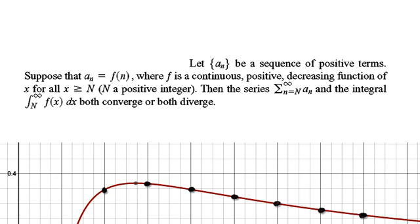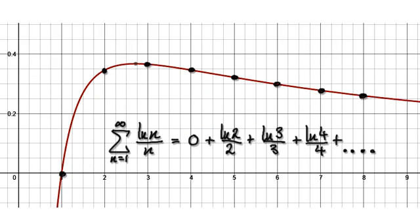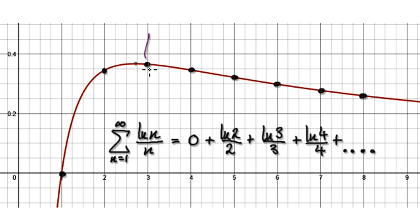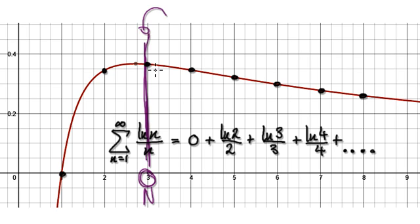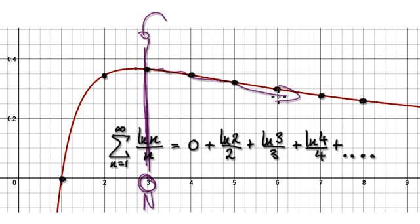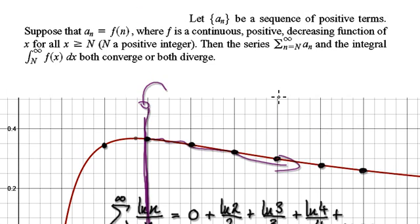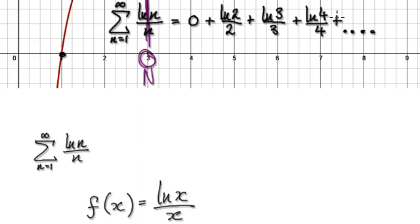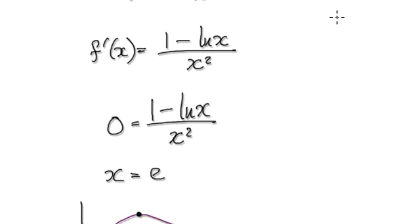Following on from the previous video, we were trying to determine whether or not this series will converge or diverge. We got to a stage where we can set our capital N to be 3. So when we break it up at capital N equals 3, we know it's going to always be decreasing, and all the required conditions will be satisfied. So we're going to break it up at N equals 3.